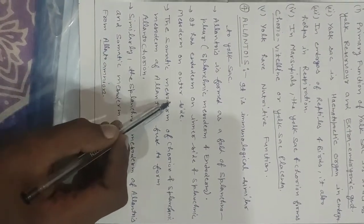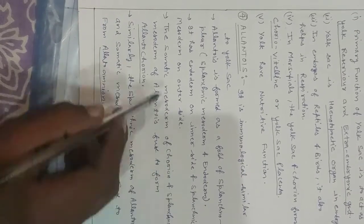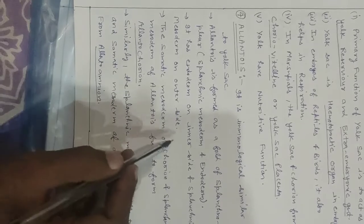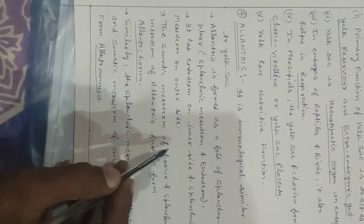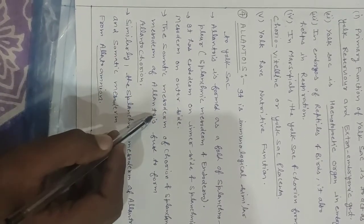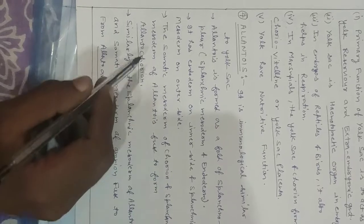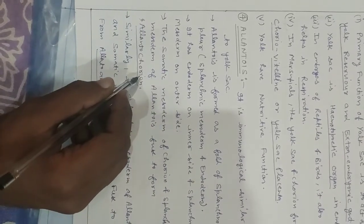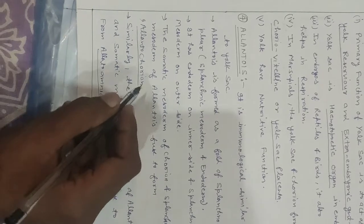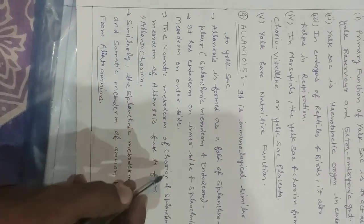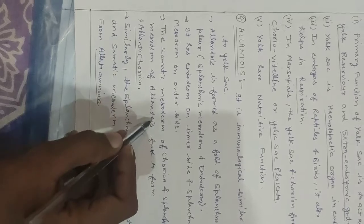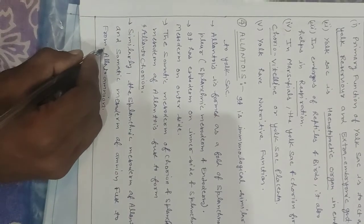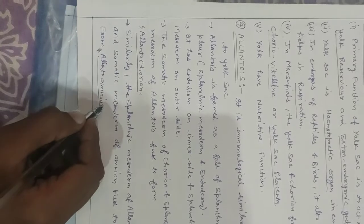The somatic mesoderm of chorion and splanchnic mesoderm of allantois fuse to form allanto-chorion. So allanto-chorion is the fused membrane of somatic mesoderm of chorion and splanchnic mesoderm of allantois. A common exam question asks: what is allanto-chorion?